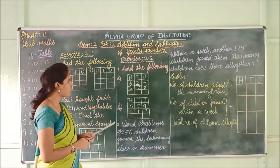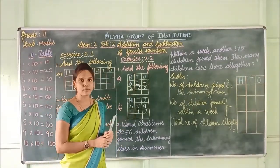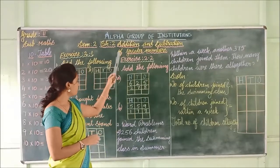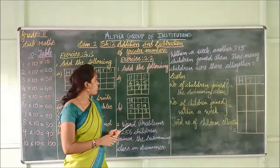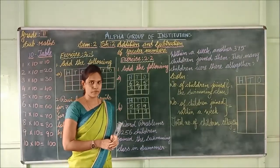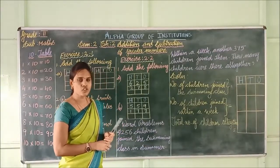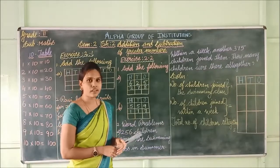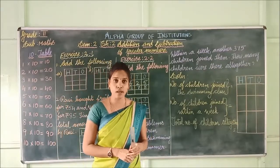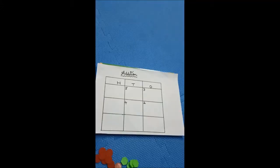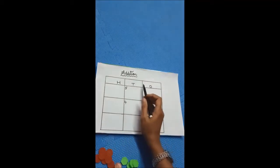In semester 1 we practiced addition and subtraction for smaller numbers. Now we are going to see addition and subtraction for greater numbers. Shall we move on to the exercise now? Before getting into the chapter you have an activity — watch the activity carefully. Now we are going to see an activity for addition. What is this? Addition.